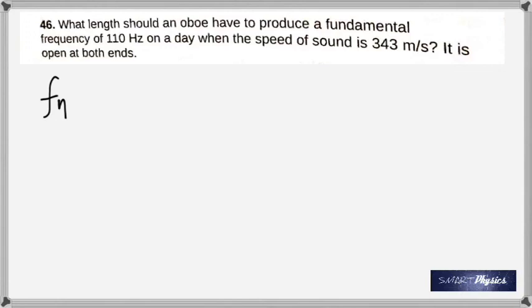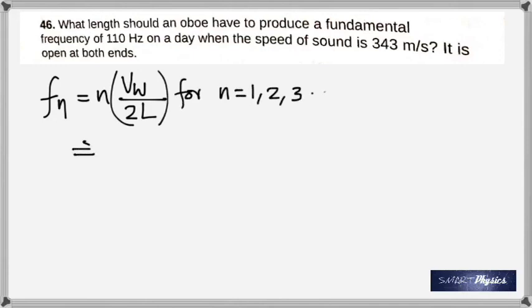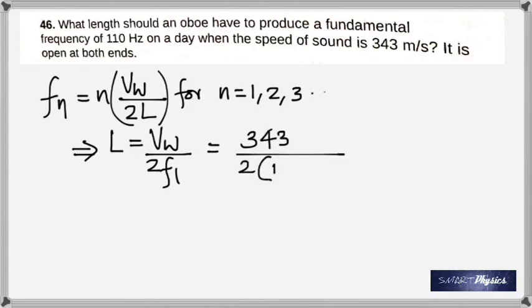What length should an oboe have to produce a fundamental frequency of 110 hertz on a day when the speed of sound is 343 meter per second? It is open at both ends. Again, an open pipe and the same thing, just a repeat of what we did before. Except that this time you're trying to find the length. Again, it's fundamental frequency, so n is 1. Just rearrange and make l the subject. The frequency is given as 110. Again, it's 1.56 meter.